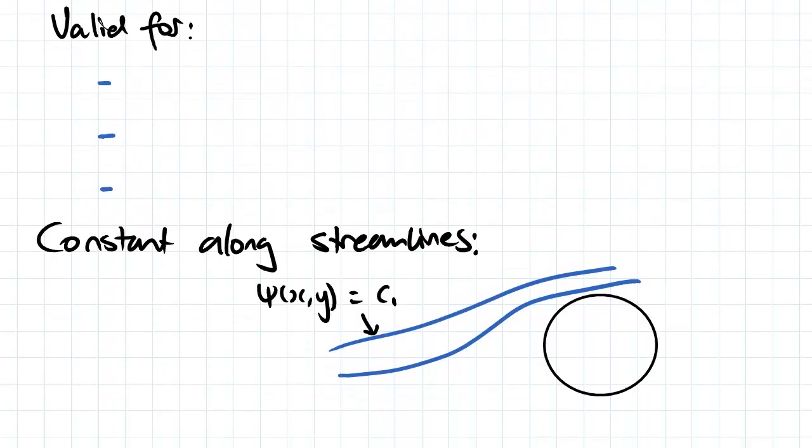So the stream function is valid for steady flows, which means that d rho dt equals zero. It's also valid for incompressibility.